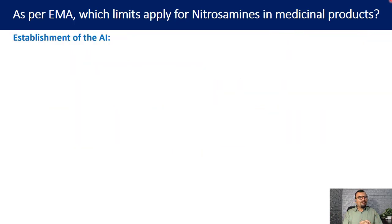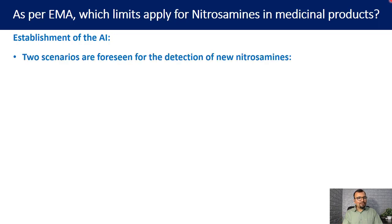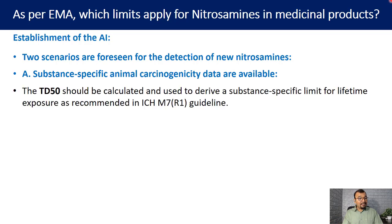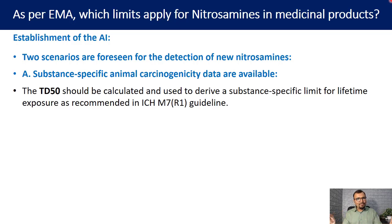There are two possible approaches to establish the acceptable intake for a given nitrosamine. The first is when substance-specific animal carcinogenicity data is available. In that case, you can calculate the TD50 value and then extrapolate to a concentration that results in a tumor in 1 out of 100,000 studied species throughout their lifespan. TD50 is the concentration that results in a tumor in 50% of the studied population. From TD50, you extrapolate to 1 in 100,000, and that concentration becomes your acceptable intake.